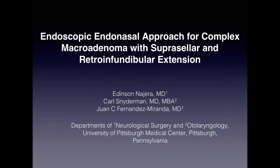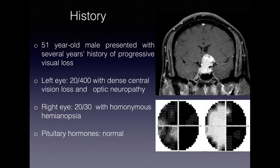We present the case of a 51-year-old male patient who presented with several years of progressive history of severe visual loss. He has homonymous hemianopsia and a dense optic neuropathy, especially on the left eye.